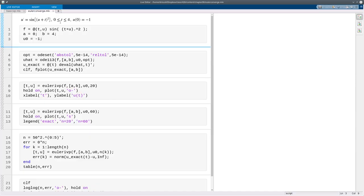So here's an initial value problem I'm going to use to demonstrate Euler's method. As always, I have to define this function f. That is what u prime equals. It's a function of t and u. I have to define the time interval, a to b, and the initial value, which is negative one here.